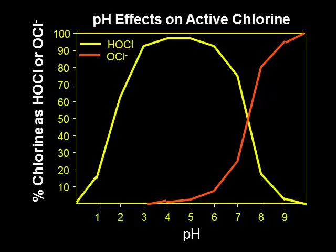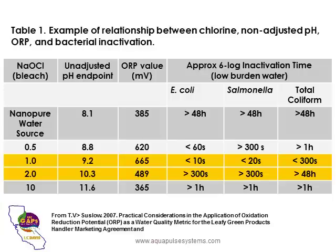This slide shows the same data in graph format. In a study done by Dr. Trevor Suslow at UC Davis, you can see that at a chlorine level of 0.5 parts per million, you have 620 millivolts of ORP, with slow kill of E. coli, salmonella, and total coliform. At one part per million, even though the pH went up, you have over 650 millivolts of ORP and got excellent kill.